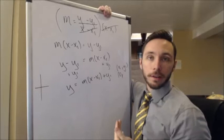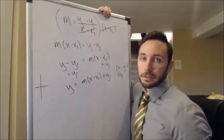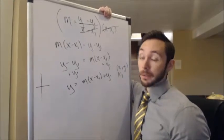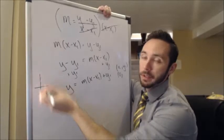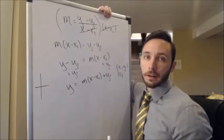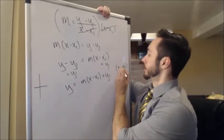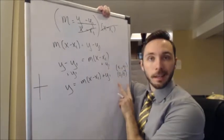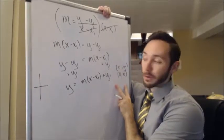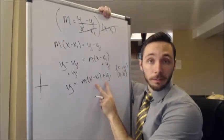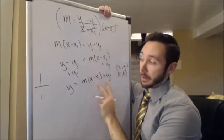Now, instead of using y sub 1, we can just arbitrarily choose another variable to denote the y-intercept. Typically speaking, that other variable that's used to denote the y-intercept is a b value. So how about I take this ordered pair at this point and plug it in for x sub 1 and y sub 1?